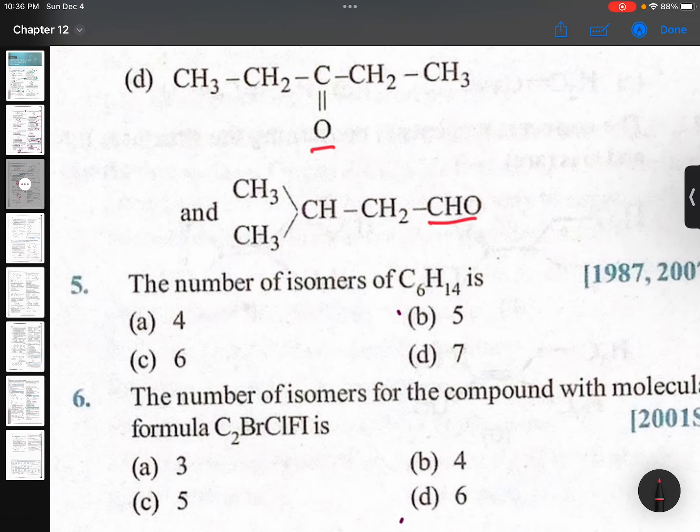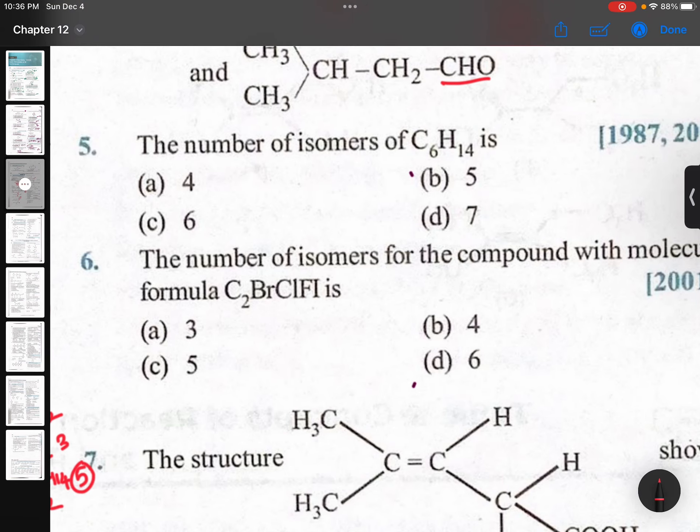The number of isomers of C6H14, how many times the questions will come? Same question. The number of isomers for the compound with molecular formula C2BrClFI.